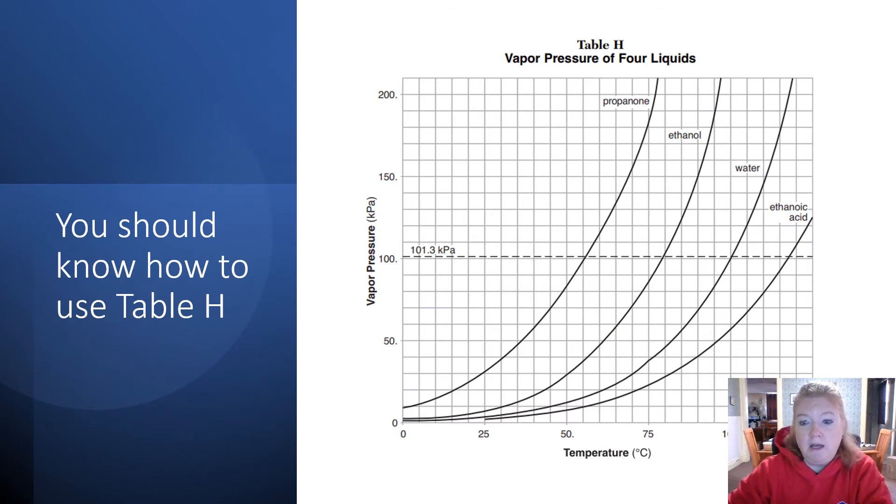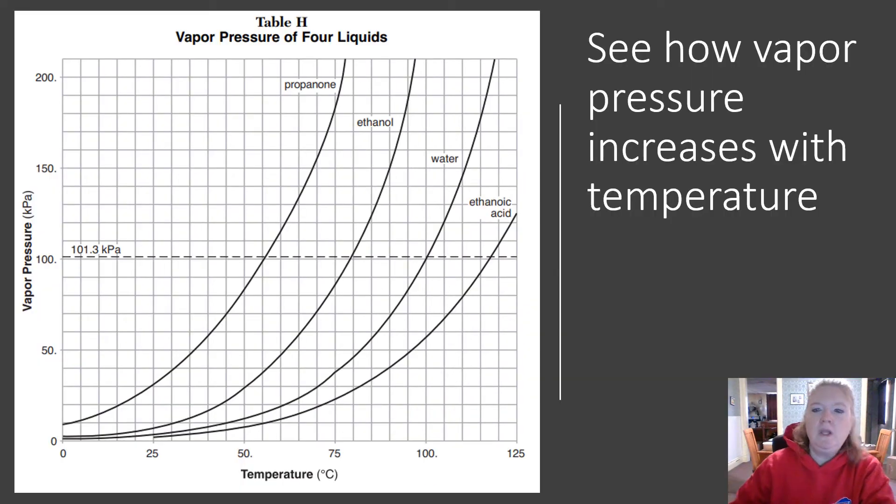You should know how to use Table H. It's a little different than the graph I just showed, but it still has four substances, vapor pressure, and temperature. On Table H, you can see how vapor pressure increases with temperature. As you increase temperature, no matter which of these four substances, the vapor pressure increases.